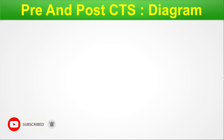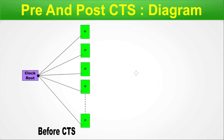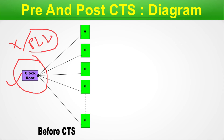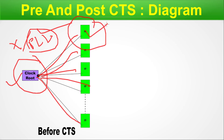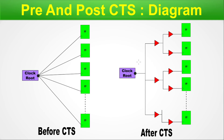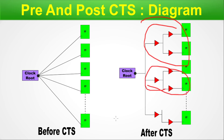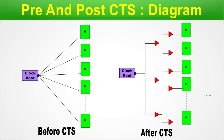Pre and post CTS explained with infographics. In the pre-CTS stage, we have a clock root — typically a PLL — with direct connections branching out to the end leaf cells, which are the flip-flops. After CTS, multiple buffers are inserted in between so that proper power management and clock signal levels are maintained. If clock gating is present, it also appears in this tree alongside the plain buffers.